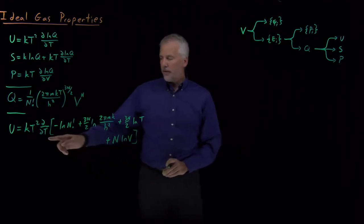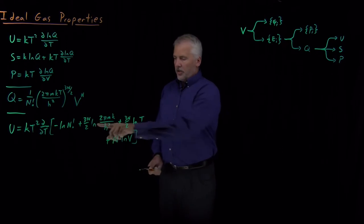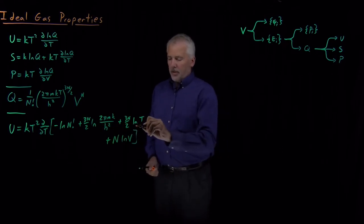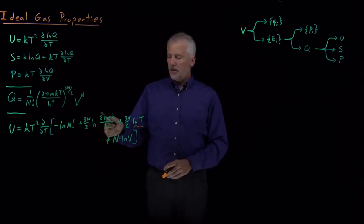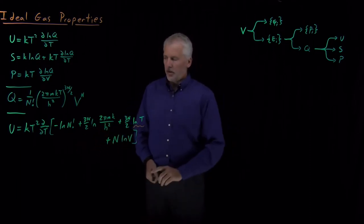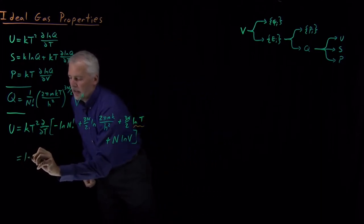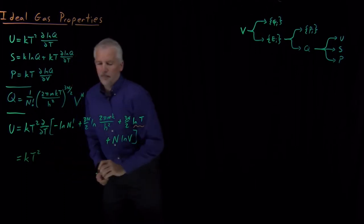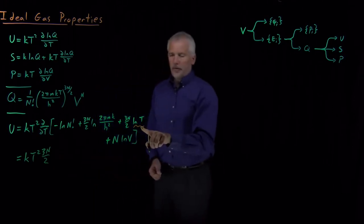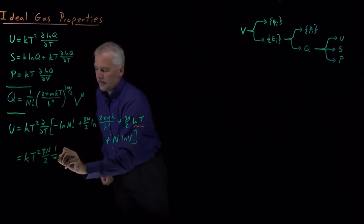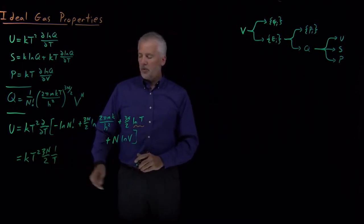So I need to take the temperature derivative of this large term in brackets. Notice there's no temperatures anywhere except right here. So when I take the temperature derivative of log n or of this log term or n log v, those derivatives all disappear because there is no temperature dependence in those terms. And all I'm left with is k t squared out front, 3n over 2. Derivative of log t is 1 over t.